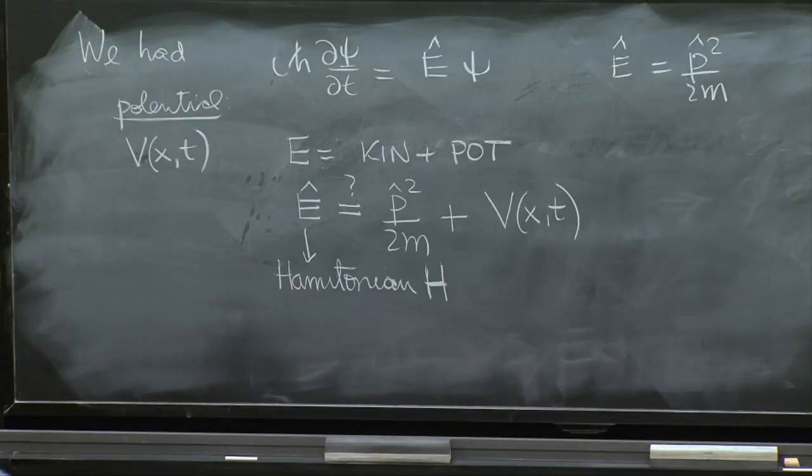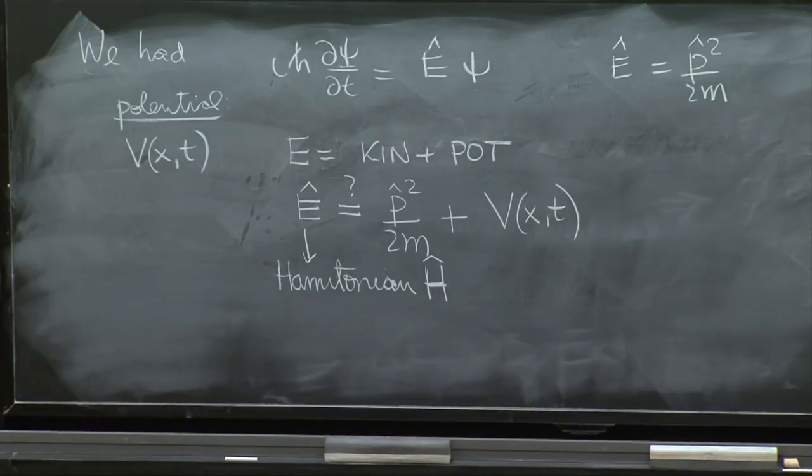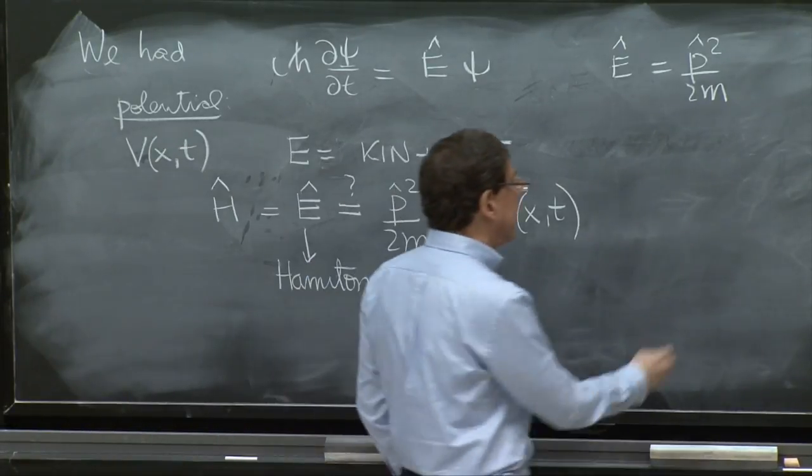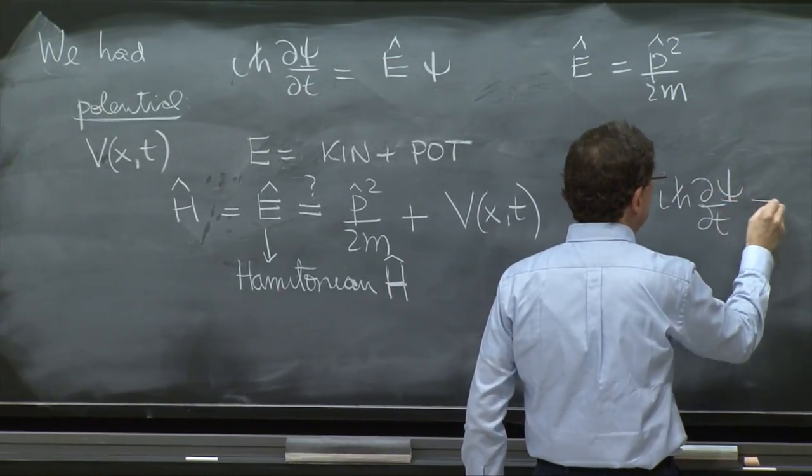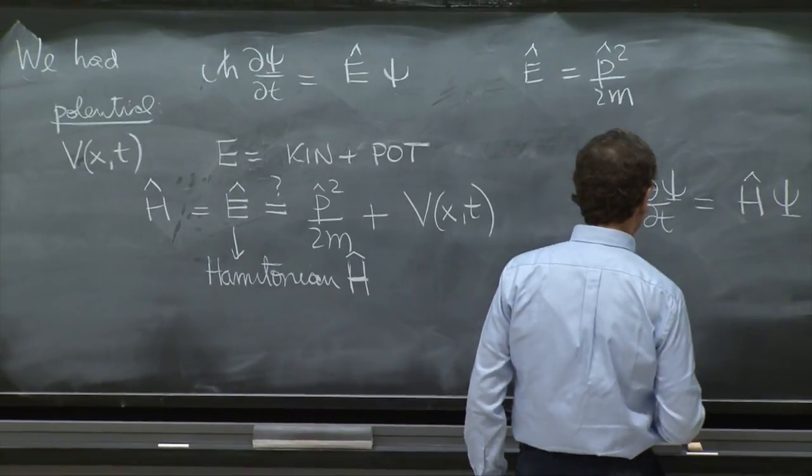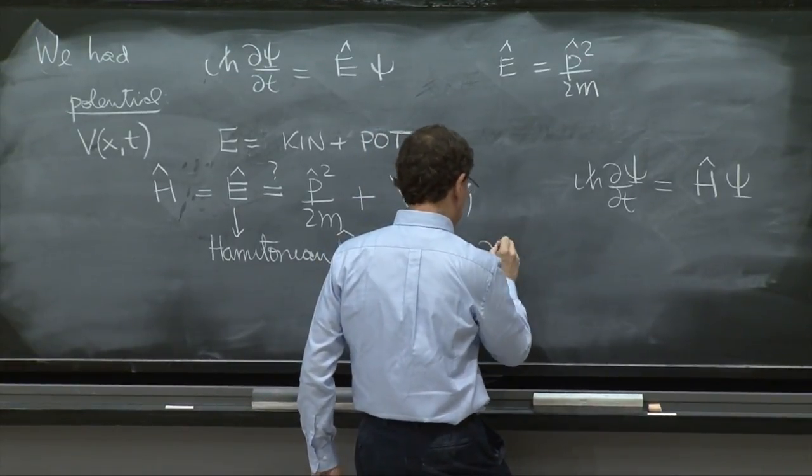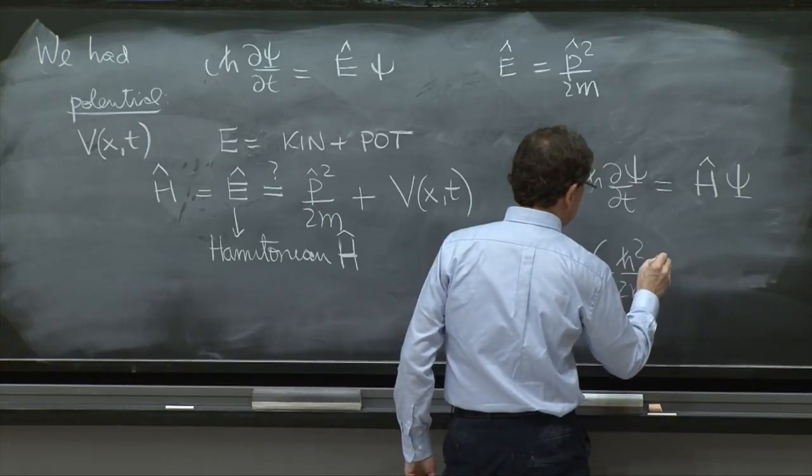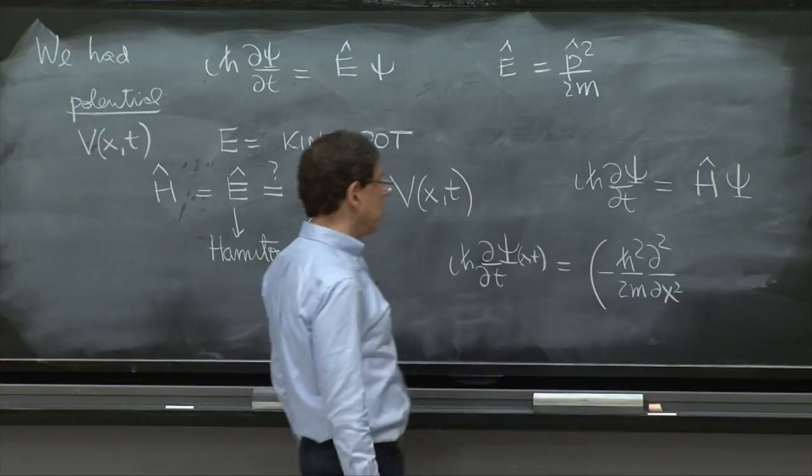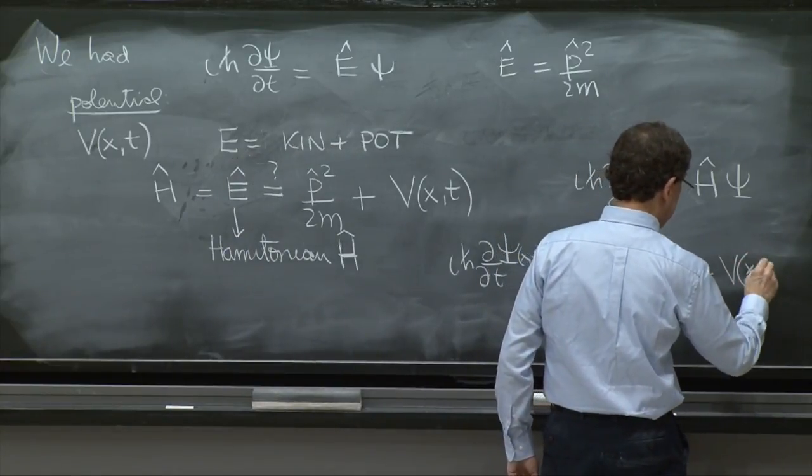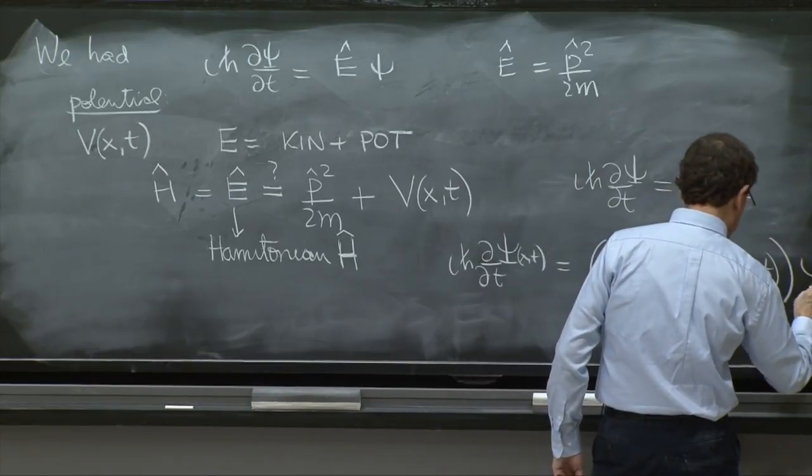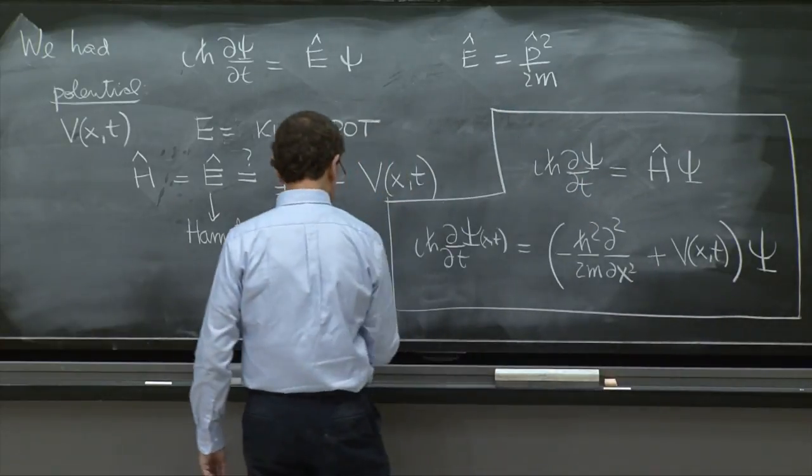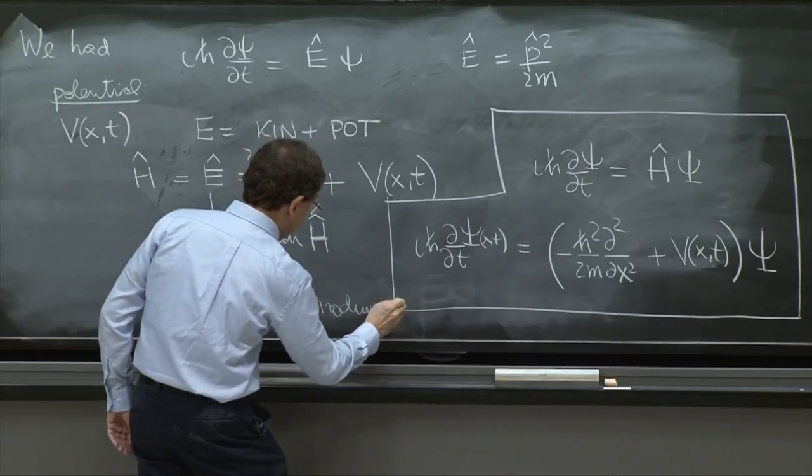So this is going to be the Hamiltonian. And we'll put the hat as well. So Schrödinger's inspiration is to say, well, this is going to be H hat. And I'm going to say that i h bar d psi dt is equal to H hat psi, or equivalently i h bar d dt of psi of x and t is equal to minus h squared over 2m d second dx squared. That's the p squared over 2m plus v of x and t all multiplying psi. This is it. This is the full Schrödinger equation.